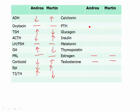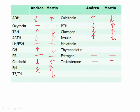Calcitonin decreases blood calcium. Andrea has eaten and has plenty of calcium, so hers is up; Martin's is down. PTH works the opposite — it increases blood calcium; she doesn't need it (down), he does (up). For glucagon and insulin: after eating, insulin is highest — Andrea's insulin is up, glucagon is down. Martin needs to pull sugar from storage, so his glucagon is up and insulin is down. Melatonin and thymopoietin are not significantly affected by breakfast — dash for both.